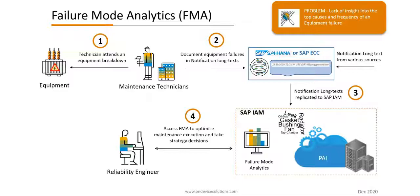The notification long text is updated via various sources throughout the lifecycle of the notification. Over a period, a lot of valuable information about an equipment is stored in the notification long text. Many organizations did not build analytics based on such data due to development complexities, thus losing valuable insights. With SAP Intelligent Asset Management, all this can be easily achieved, and it is now possible to replicate the equipment along with the notifications to SAP IAM.